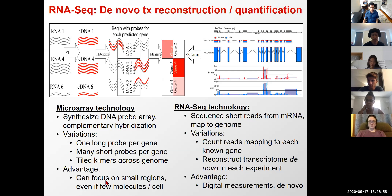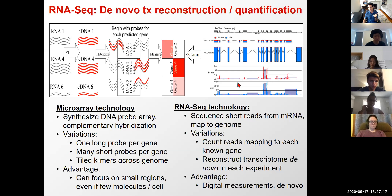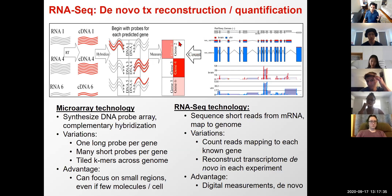The advantage of microarrays is that they focus on small regions, even with few molecules per cell, so if a region has very low abundance molecules you can directly probe them without sequencing the entire transcriptome. The advantage of RNA-seq is that you don't need to know in advance what specific genes you care about — you carry out an unbiased mRNA sequencing experiment and infer the counts of all known genes, and discover any other genes that are abundantly expressed.